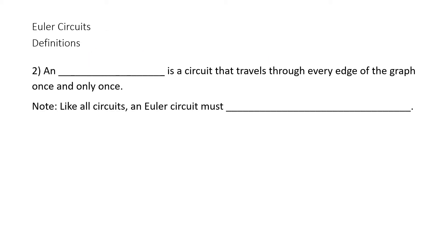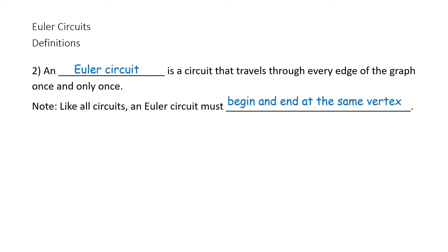Euler circuit definitions. An Euler circuit is a circuit that travels through every edge of the graph once and only once. Note: like all circuits, an Euler circuit must begin and end at the same vertex.